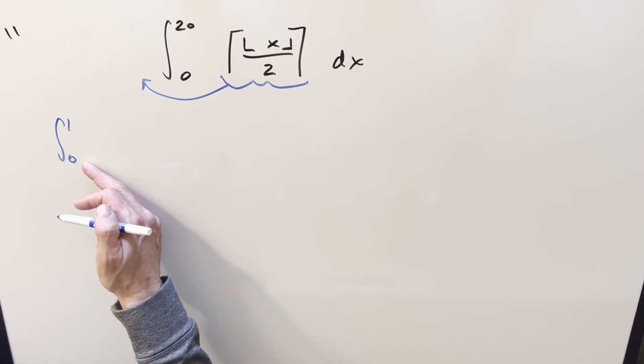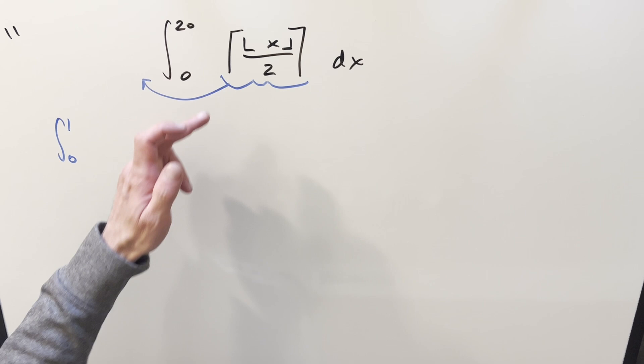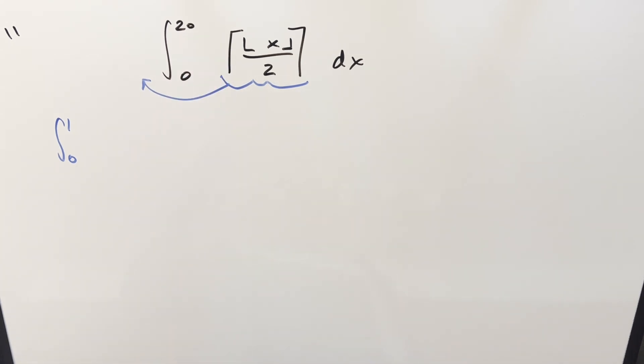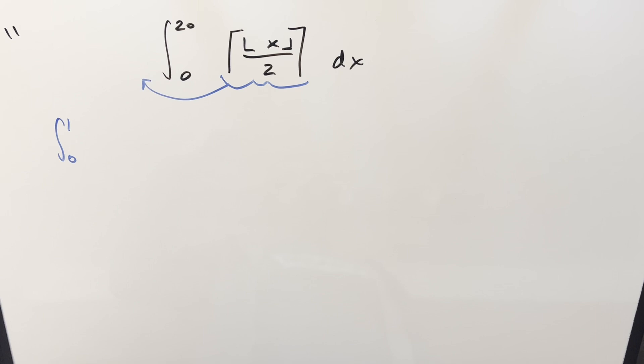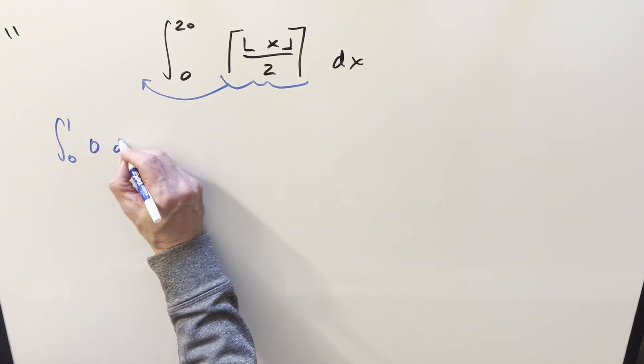We'll have a first integral going from 0 to 1. Now the floor function is going to round us down to the next highest integer. The ceiling is going to round us up to the next lowest integer. So here, if our x values are between 0 and 1, we plug it in. The floor is going to round everything down to 0. So this first integral is just going to be 0.